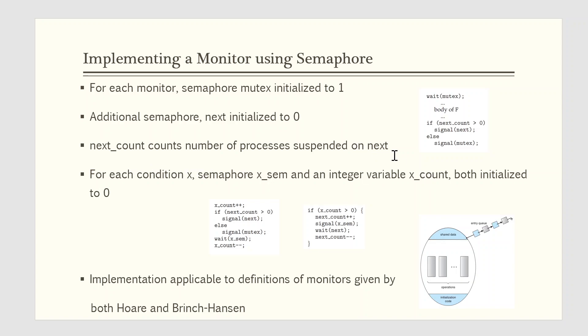Thus, each external function f is replaced by this code: wait of mutex followed by the body of external function f, and then next_count value is checked. If it's greater than 0 then signal of next is called else signal of mutex is done. Mutual exclusion within the monitor is ensured here.